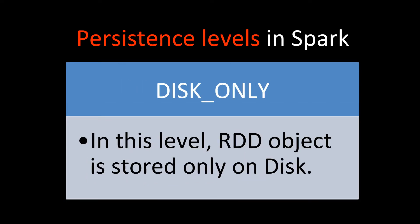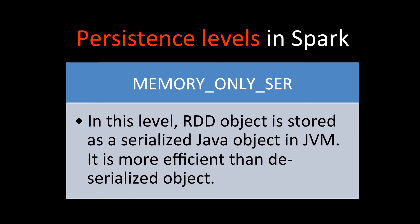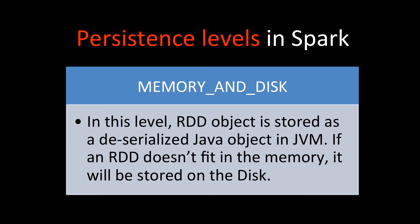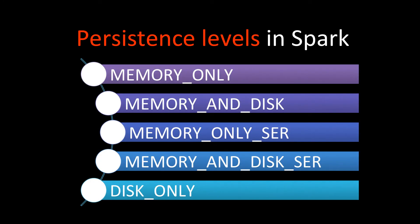Last, we have disk only, where the RDD is stored only on disk. To recap, the different persistence levels in Apache Spark are: disk only, memory and disk serialized, memory only serialized, memory and disk, and memory only.